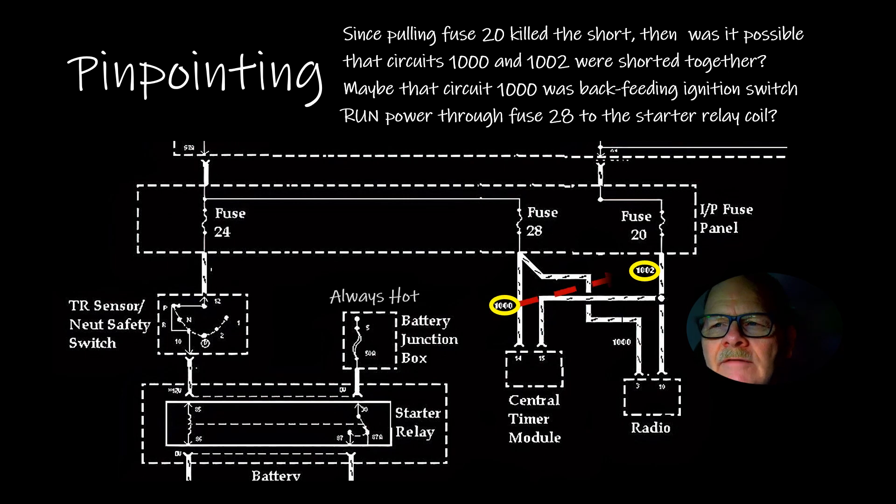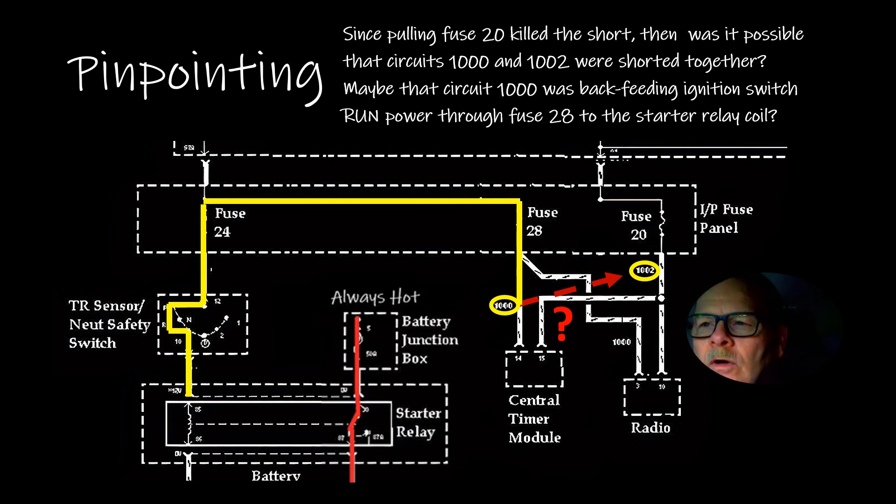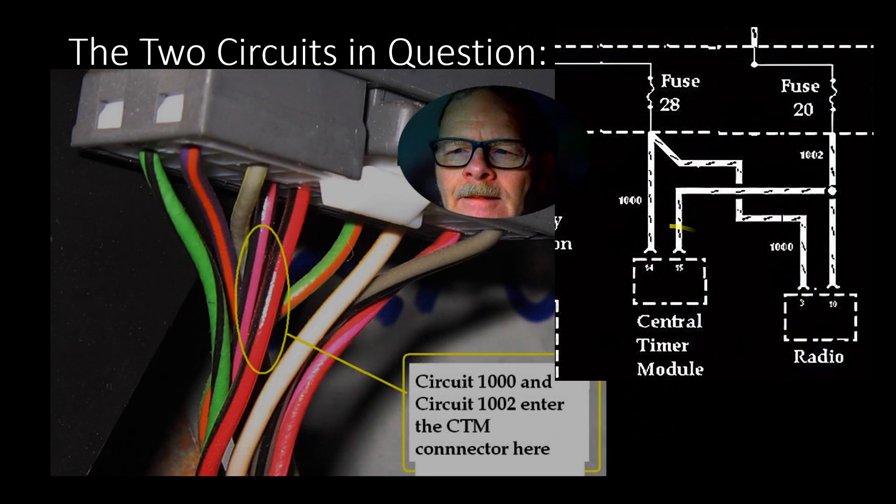Pulling fuse 20 killed the short. Was it possible that circuits 1000 and 1002 were shorted together? Maybe that circuit 1000 was back feeding the ignition switch run power through fuse 28 to the starter relay coil.